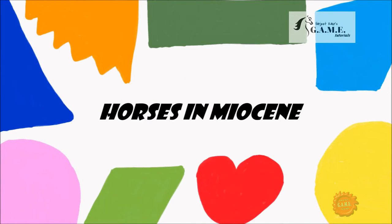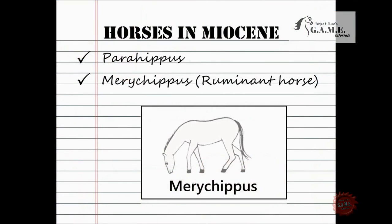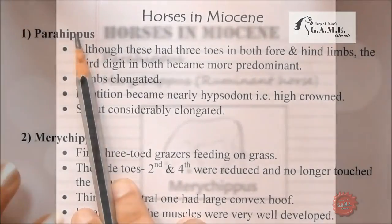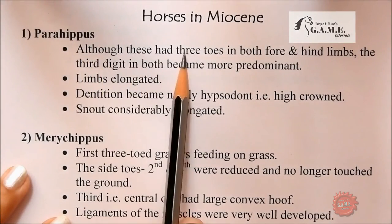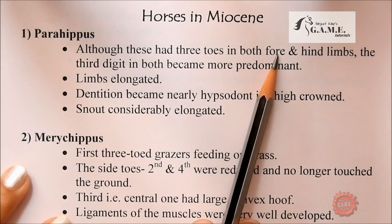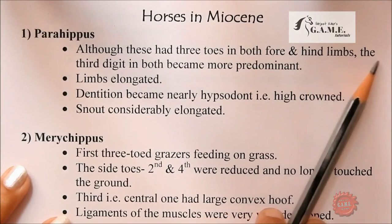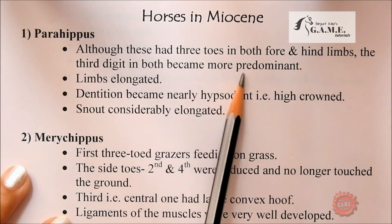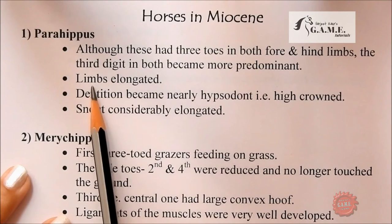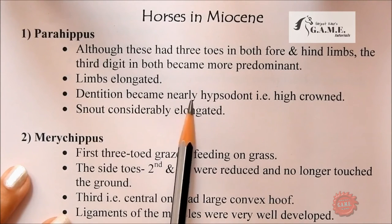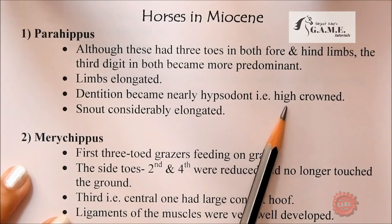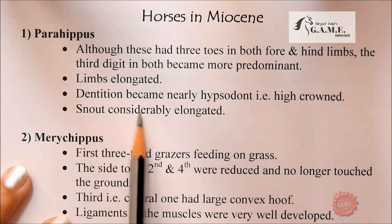Moving to horses in the Miocene: we have Parahippus and Merychippus, also called the ruminant horse. Parahippus had three toes in both fore and hind limbs, with the three digits becoming more predominant. Limbs were short and dentition became nearly hypsodont, with the snout considerably elongated.